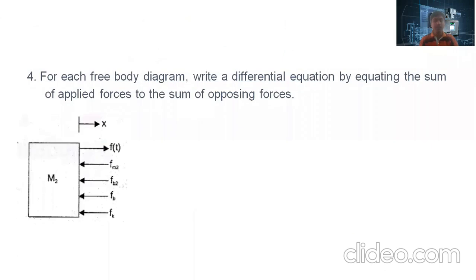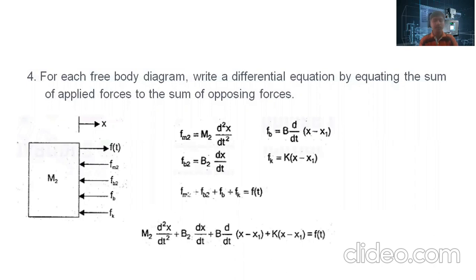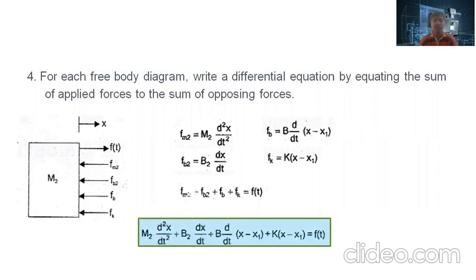Similarly, we write the differential equation for the second free body diagram. The opposing forces FM2, FB2, FB, and FK are given by the force balance equations. Applying the force balance equation: FM2 + FB2 + FB + FK = F(t). Substituting, we get: M2·d²x2/dt² + B2·dx2/dt + B·d/dt(x2−x1) + K(x2−x1) = F(t). This is equation 2.